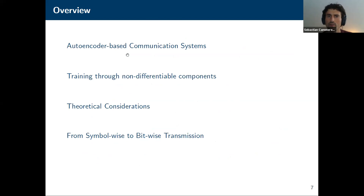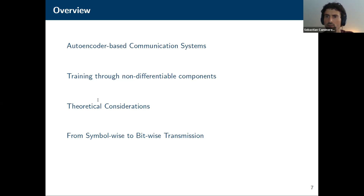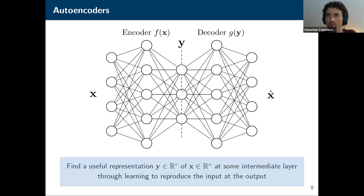To outline the talk: we'll quickly look into what autoencoders are, then look into training through non-differentiable components. For a physical channel, we have difficulties training the system because of the missing channel gradient. We'll also look at more theoretical considerations — what happens when we train this autoencoder, why cross-entropy loss is the best choice, and its fundamental meaning in communications. Finally, we'll move from symbol-wise to bitwise transmission of information.